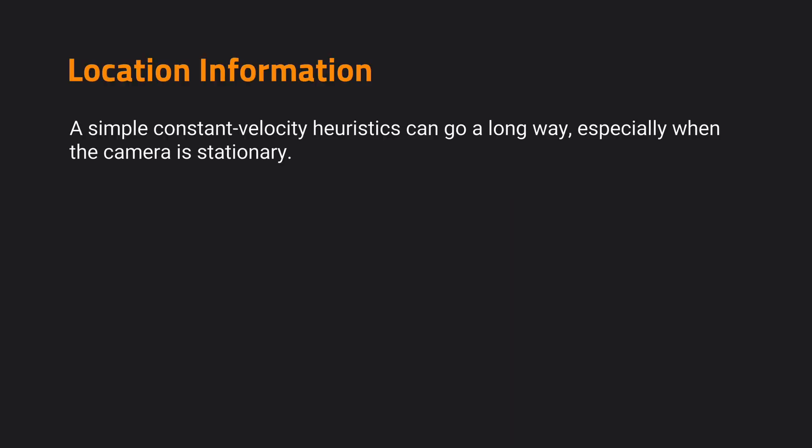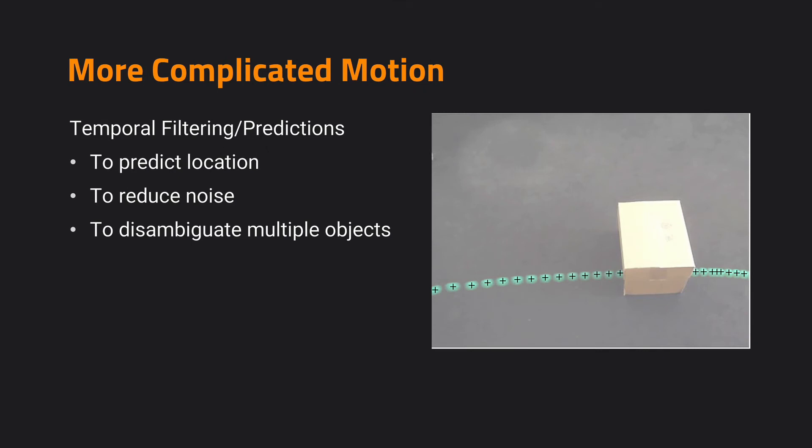In addition to the appearance information we have talked about, we can also use location information to smooth out the trajectory, so that by using some assumption in terms of how the target object moves, we can track it and model its trajectory more accurately. Usually a simple constant velocity heuristic can go a long way, at least when our camera is stationary. But for more complicated motion, we need to predict where the object will be in the future time step. When we observe a location, the observation may suffer some noise, and we need to find a way to filter that noise, and also disambiguate multiple objects.